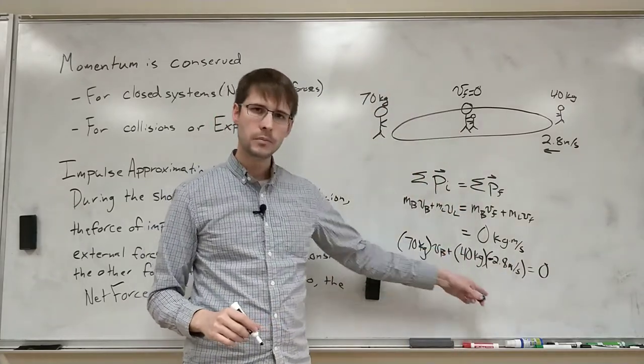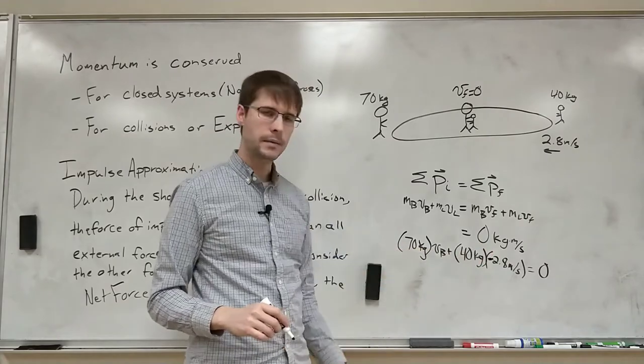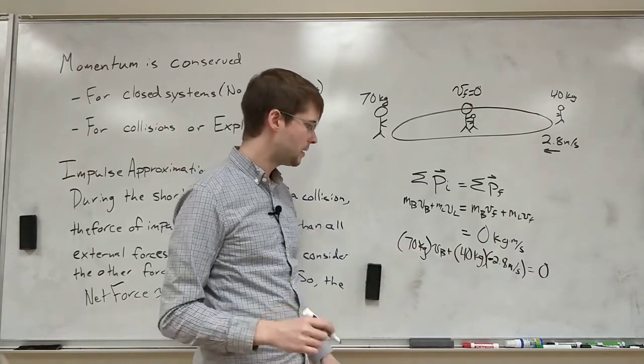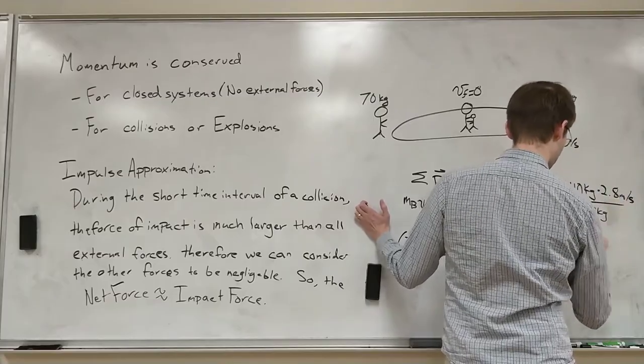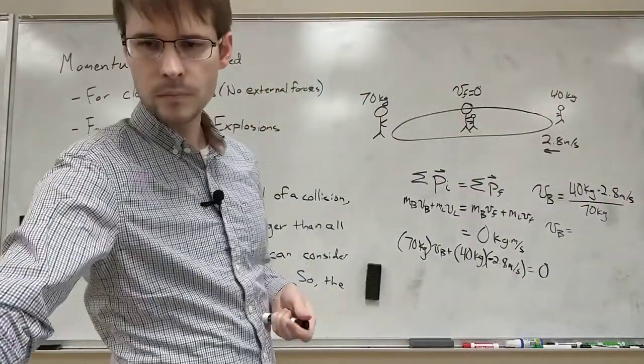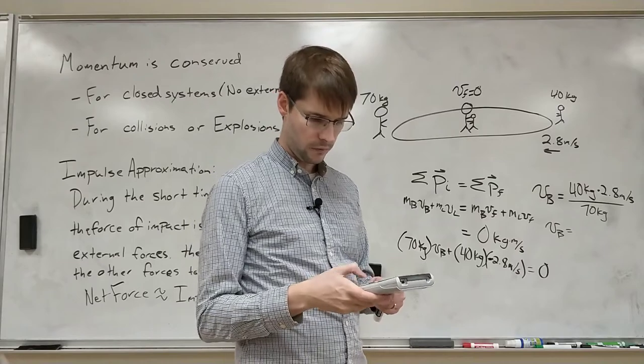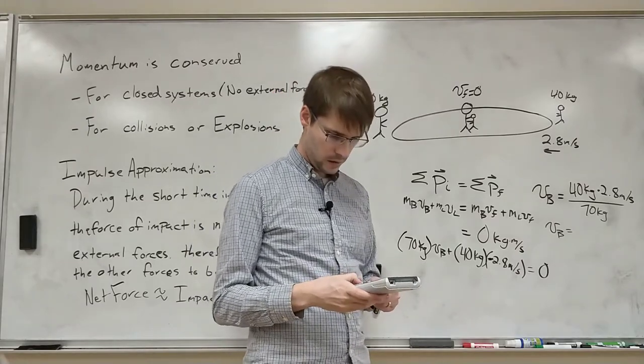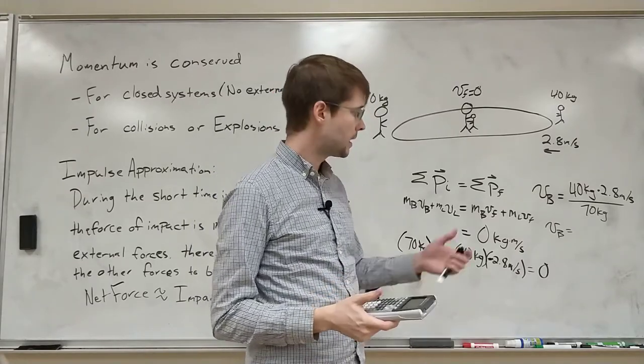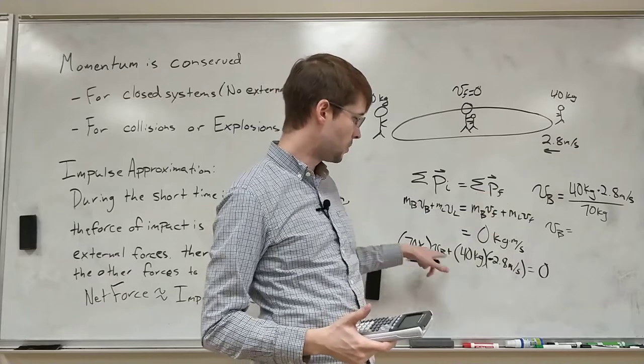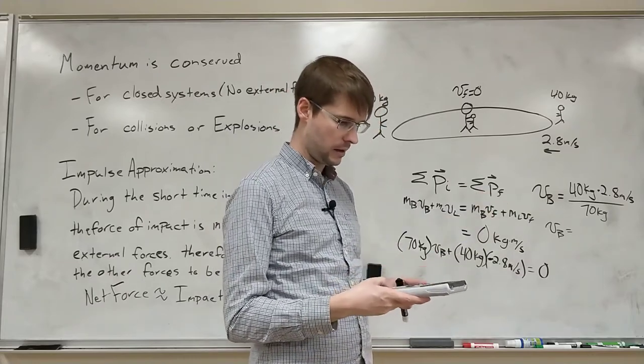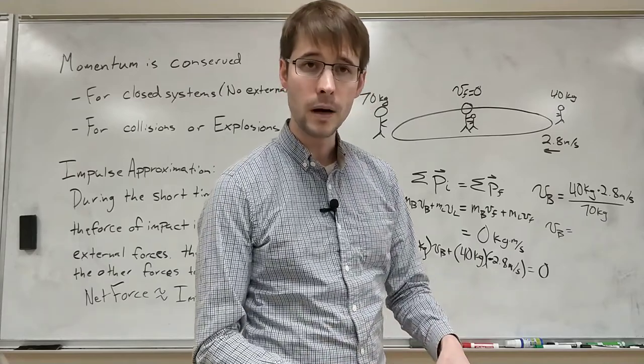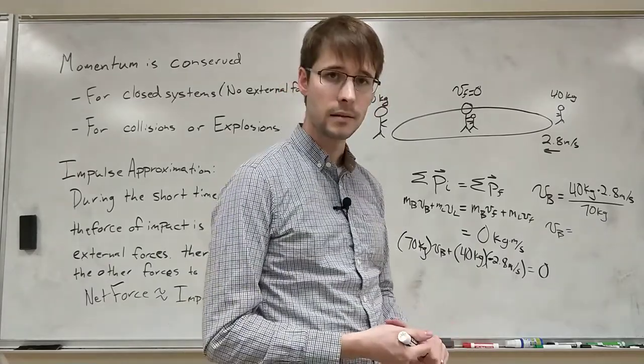Now if we solve what we need to do, bring this to the other side, divide by 70 kilograms and we get... We've got 40 kilograms times 2.8 meters per second. That's to the left but there's a negative because we brought it over to the other side of the equation. Divided by 70 kilograms and we get 1.6 meters per second to the right.